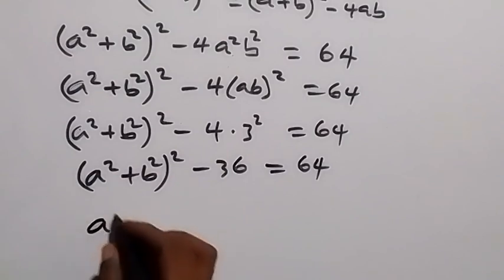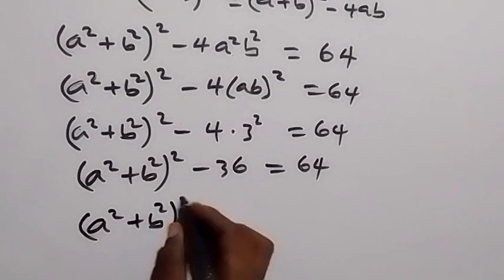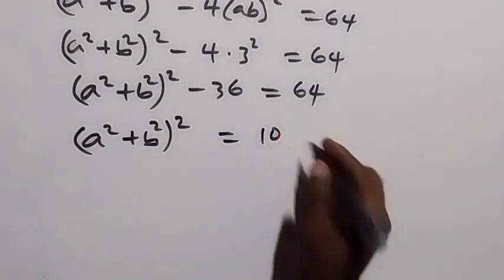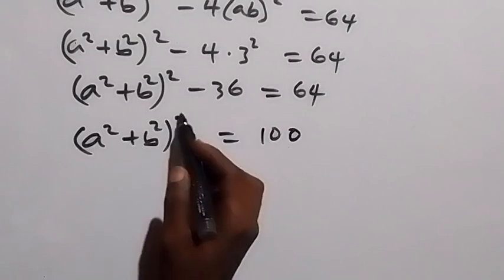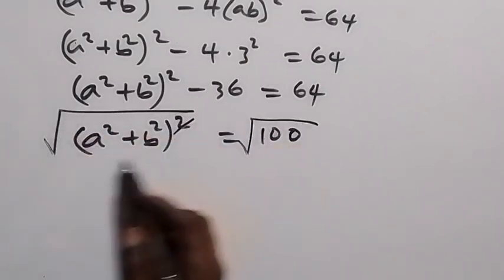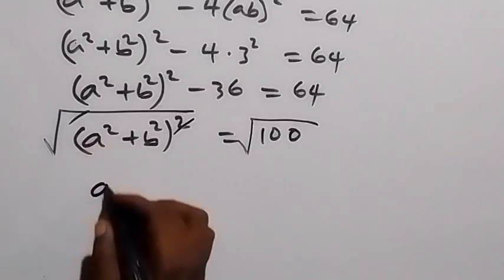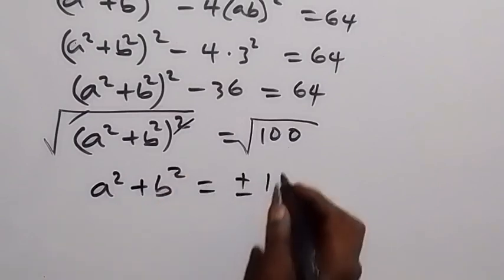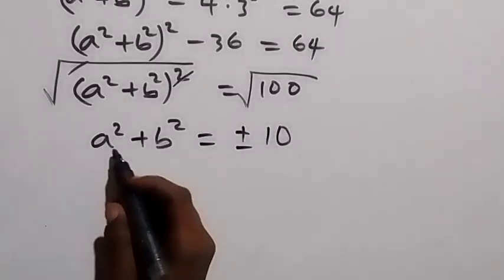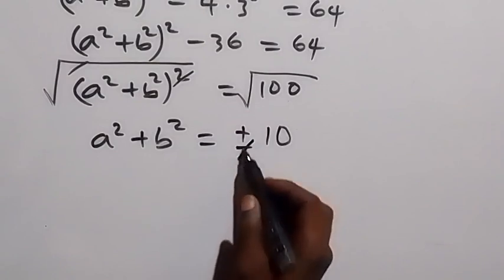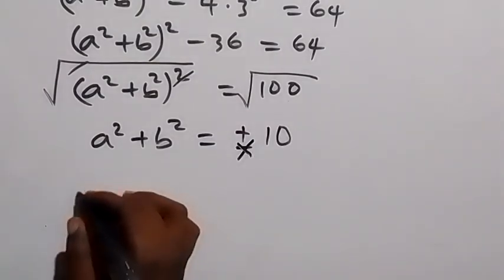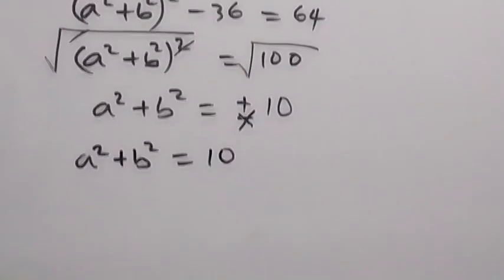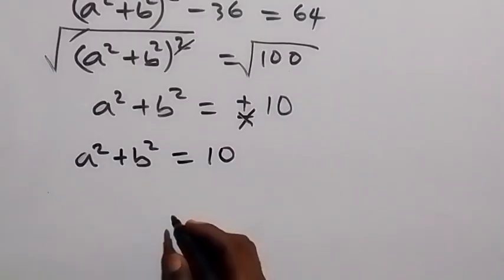From here, taking minus 36 to the other side it becomes plus, so 64 plus 36 equals 100. We have a squared plus b squared, squared, equals to 100. Finding the square root of both sides to remove the square, we get a squared plus b squared equals to plus or minus 10. Since a squared plus b squared cannot be negative, we cancel the negative part. Therefore, a squared plus b squared equals to 10.